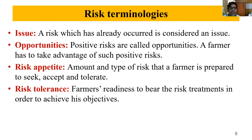Then we have some terminologies. First is 'issue': a risk which has already occurred is considered an issue. If the incidence of mealybug in papaya or pink bollworm in cotton occurs every year, it becomes an issue — a repetitive risk that is called an issue.